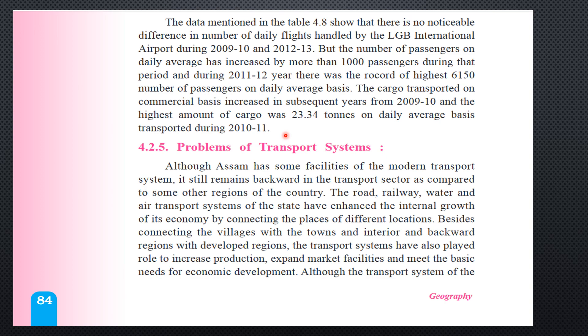The data in Table 4.8 shows no noticeable difference in the number of daily flights handled by the Lokapriya Gopinath Bordoloi International Airport during 2009–10 and 2012–13. However, the number of passengers on a daily average increased by more than 1,000 during that period, with a record high of 6,150 passengers per day in 2011–12. Cargo transported on a commercial basis increased in subsequent years from 2009–10, with the highest daily average of 23.34 tons recorded in 2010–11. The amount of transportation through road, water, and rail in Assam is still much higher than through air.